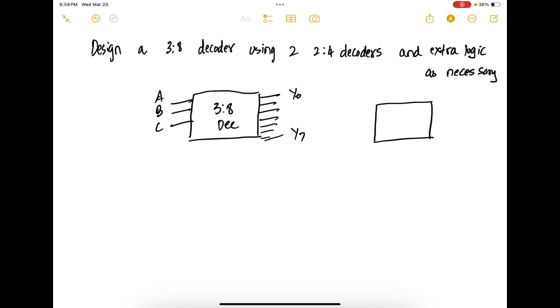Next you have a 2-to-4 decoder which has two inputs A, B and it has an enable input as well followed by four outputs Y0 to Y3. Now you want to use two of these plus some extra logic to realize this one here. How do you solve it?